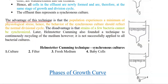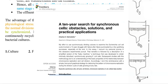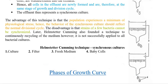The advantage of the Helmstetter-Kumming technique is that the synchronous culture developed experiences minimum physiological stress, so its behavior should exactly reflect the normal cell division cycle. The main disadvantage is that some bacteria cannot be synchronized using this technique. By developing this technique, Helmstetter-Kumming also founded a continuously recycling of the used medium; however, it was not successfully applied in batch culture multiplication.